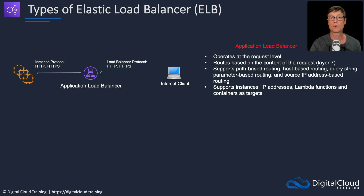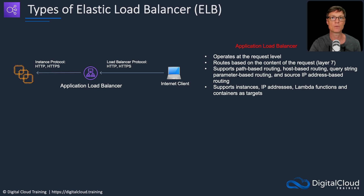The ALB supports path-based routing, meaning the path in the URL can be used to determine which group of back-end instances to send the connection to. It also supports host-based routing, which checks the domain name to make a routing decision. Query string parameter-based routing checks for query strings in the URL and routes based on that information. So the ALB is quite intelligent in how it checks this information and makes routing decisions.